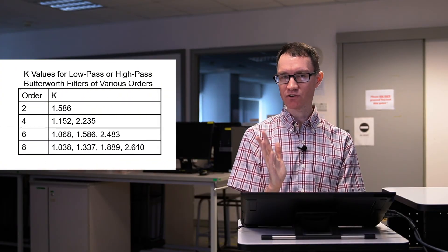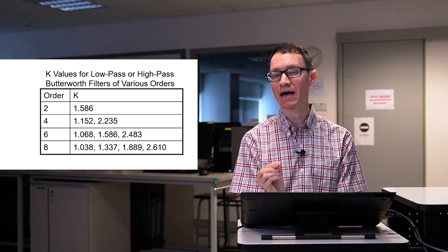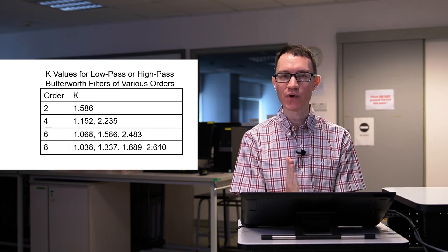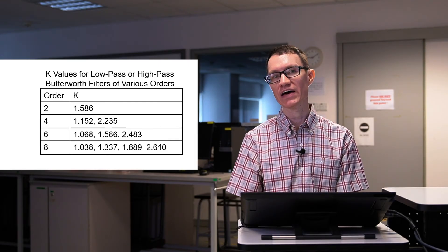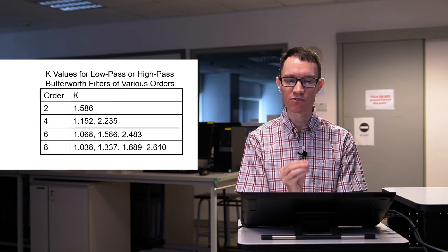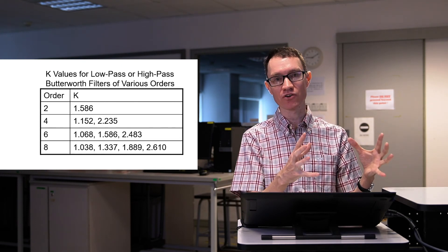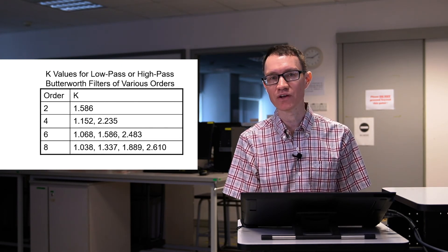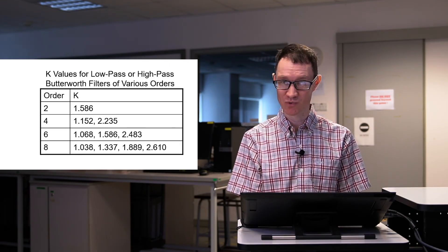The table that you're seeing right now allows you to choose the appropriate gain magnitude. For example, with a second order filter, you have to choose a K of 1.586 and that ensures that the filter will be a Butterworth filter. If you want an order of 4, then you have to have two stages, one cascaded after another, each of them with a slightly different DC magnitude. And that would ensure that your fourth order filter would be a Butterworth filter.